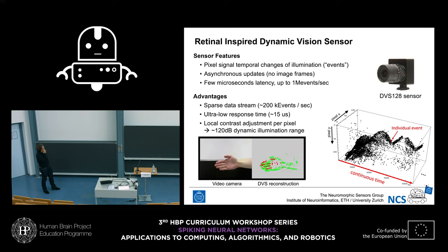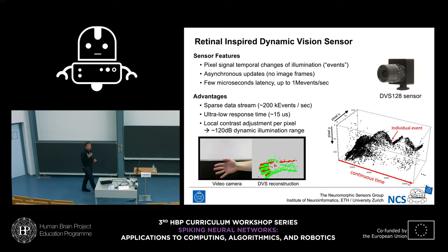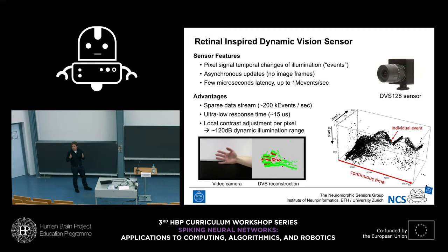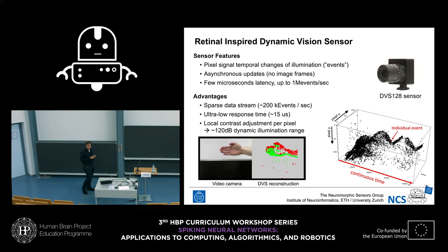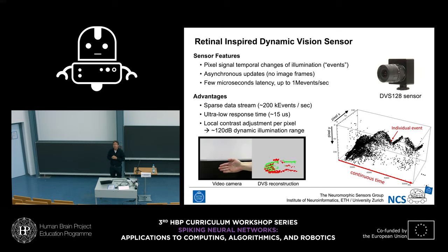This is a different way of representing visual information with some advantages. We get a sparse data stream — much less data than consecutive images. We have very low response time: when things move or when the light is switched on, within a few microseconds we can observe and respond. That's the temporal coding mentioned earlier — first spike to activity, we don't have to wait tens of milliseconds for the next image. This camera also has very high contrast sensitivity, on the order of 120 decibel dynamic range — working simultaneously in dark areas and in bright sunlight.